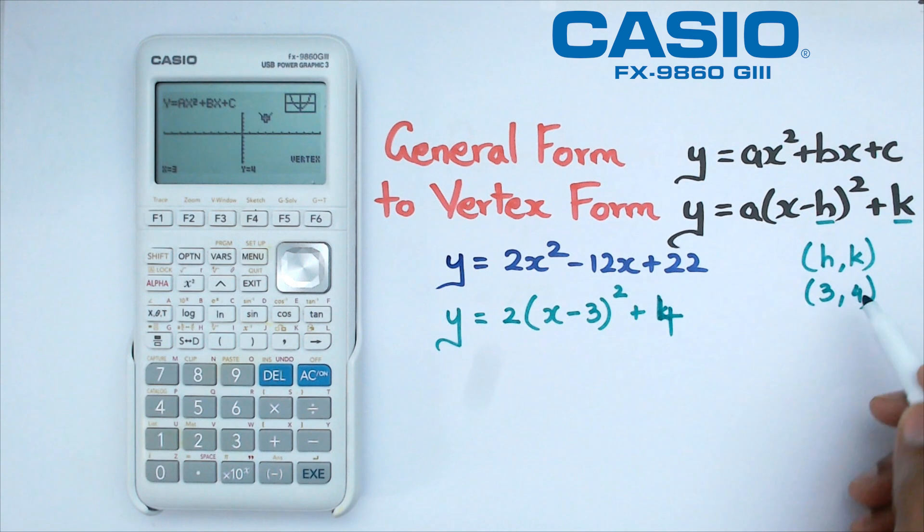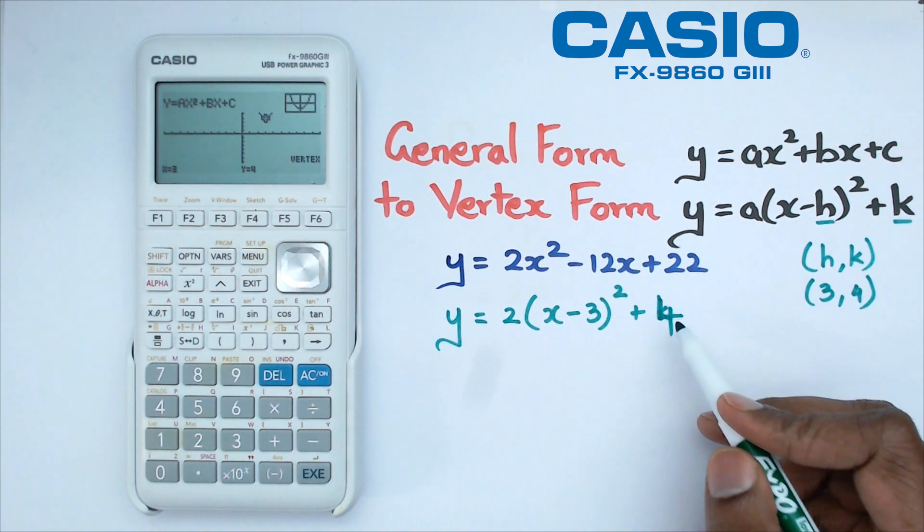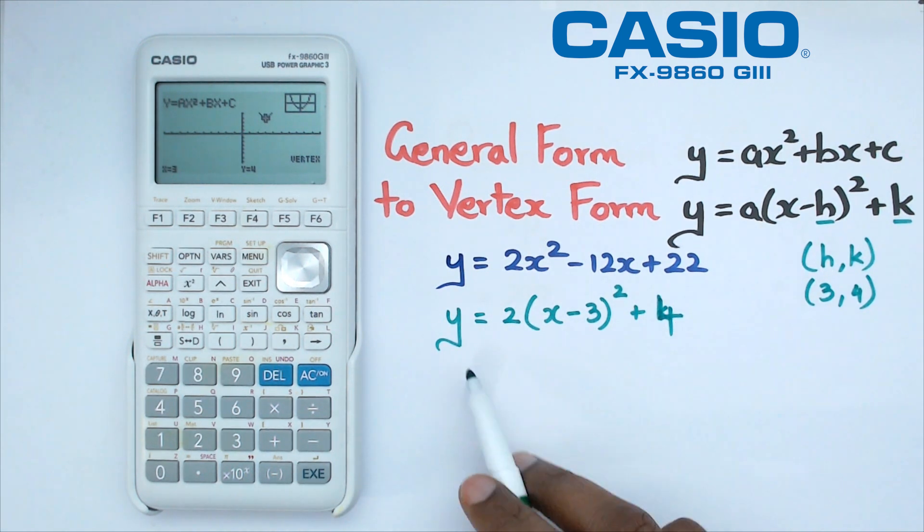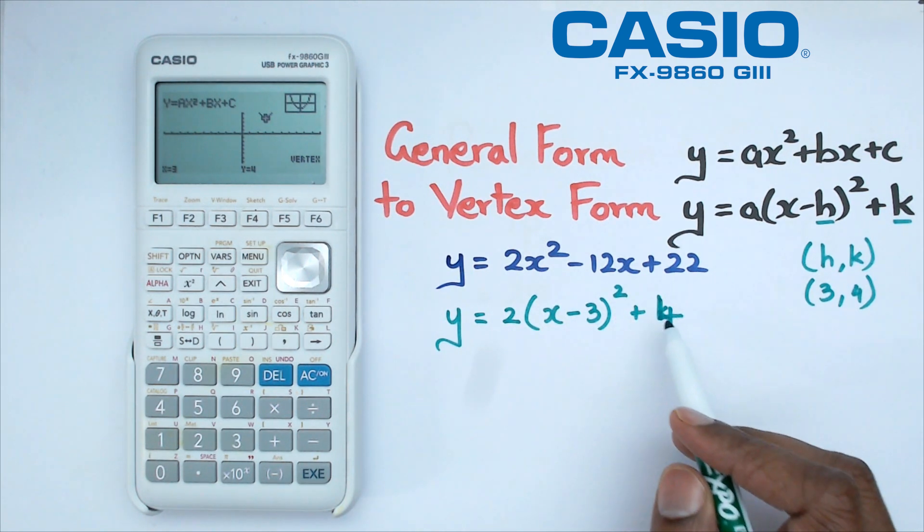Sorry, this should have been a 4 right here. So the k is 4 and then this value here should be 4 as well. So our vertex form is y equals 2 bracket x minus 3 squared plus 4. I shouldn't have actually put that as a k, that's alright we made a mistake.